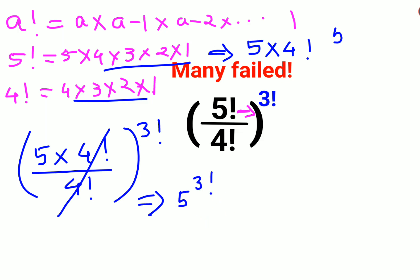And what is 3 factorial? 3 factorial is 3 into 2 into 1, that is 6. So basically the answer for this one is 5 raised to 6.